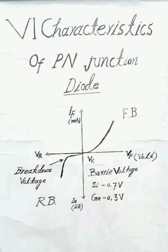In reverse bias, when the voltage is less than the PIV (peak inverse voltage), the diode acts as an open circuit and only a very small leakage current flows in microamperes. However, if the reverse voltage exceeds the peak inverse voltage, the diode is damaged due to heat produced at the PN-junction.